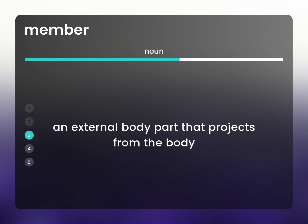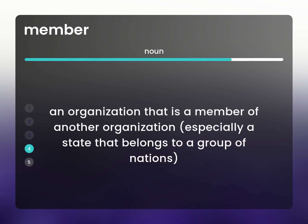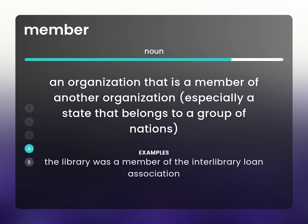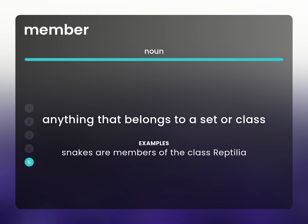An external body part that projects from the body. Synonyms: appendage, extremity. Also, an organization that is a member of another organization, especially a state that belongs to a group of nations. Example: The library was a member of the Interlibrary Loan Association. Additionally, anything that belongs to a set or class. Example: Snakes are members of the class Reptilia.